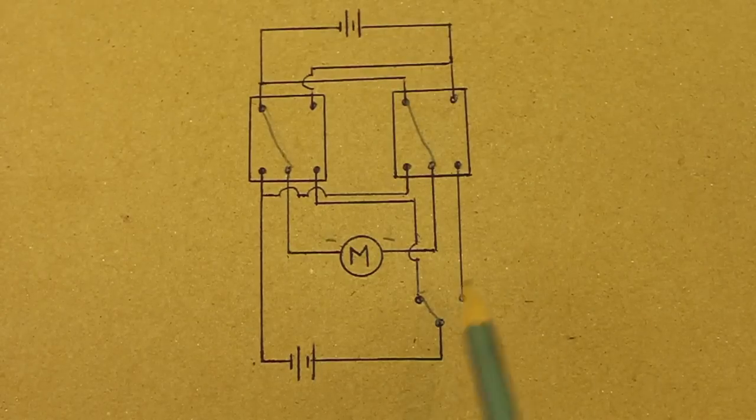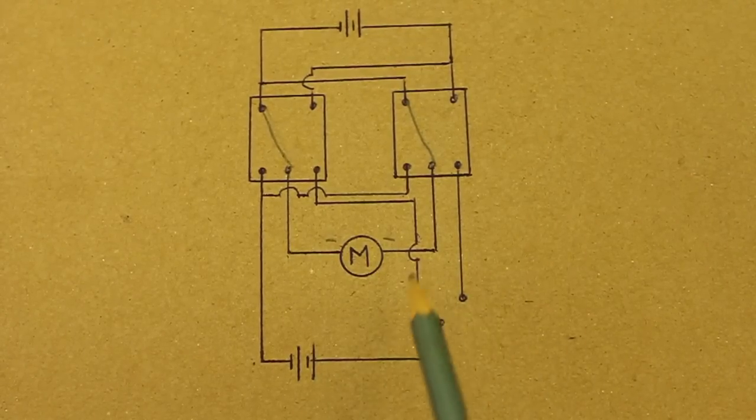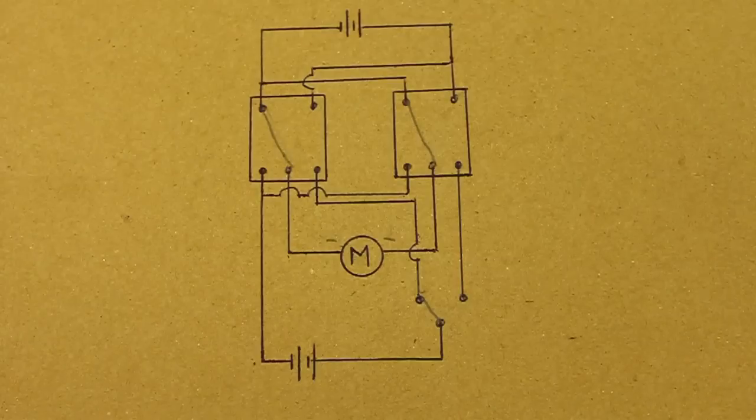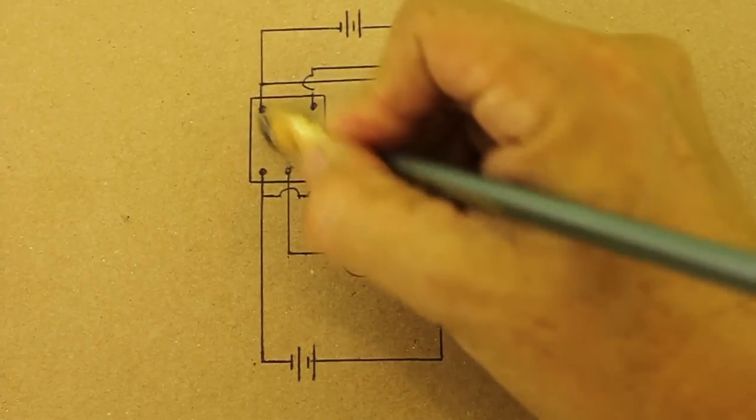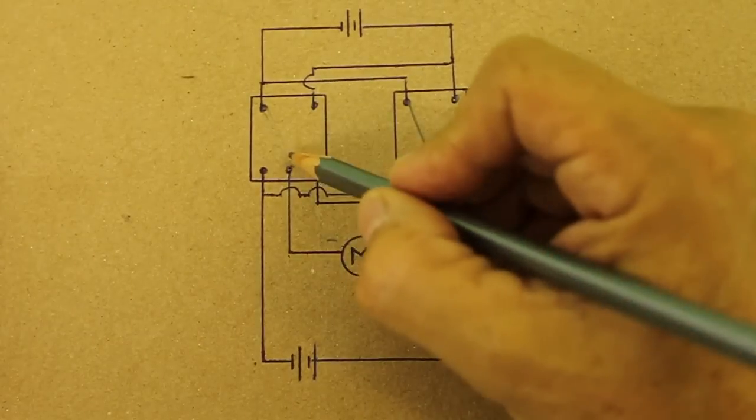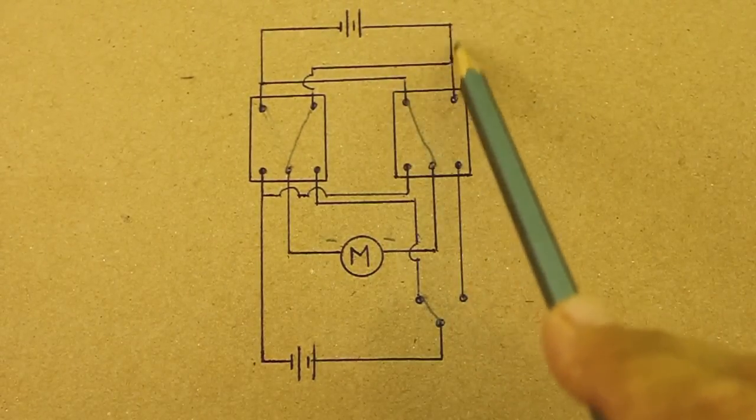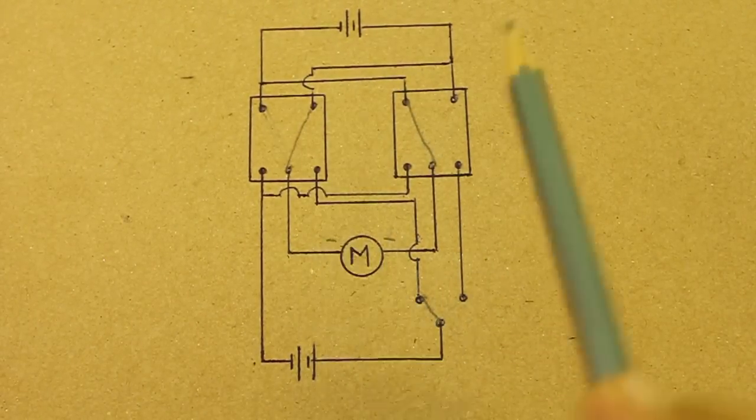Now if the switch is in this position, this coil is activated and this relay will move its position to here. Now, the positive of the battery goes to this side of the motor.